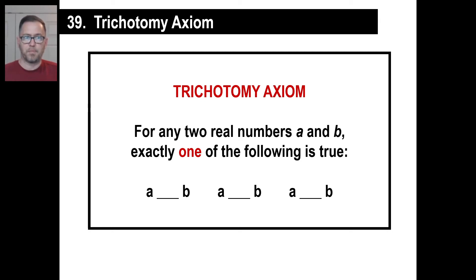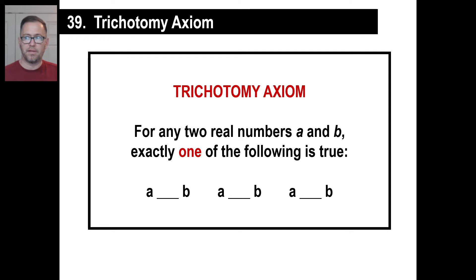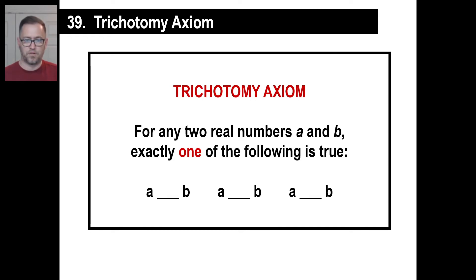Hey y'all. Let's take a look at a couple of things here. We're going to start off with what's called the trichotomy axiom, which sounds like some kind of disease you get in the Amazon jungle or something. But trichotomy — tri is three. An axiom is a mathematical theory. This is what it is — it's a piece of cake. For any two real numbers A and B, exactly one of the following is true: either A equals B, A is greater than B, or A is less than B.